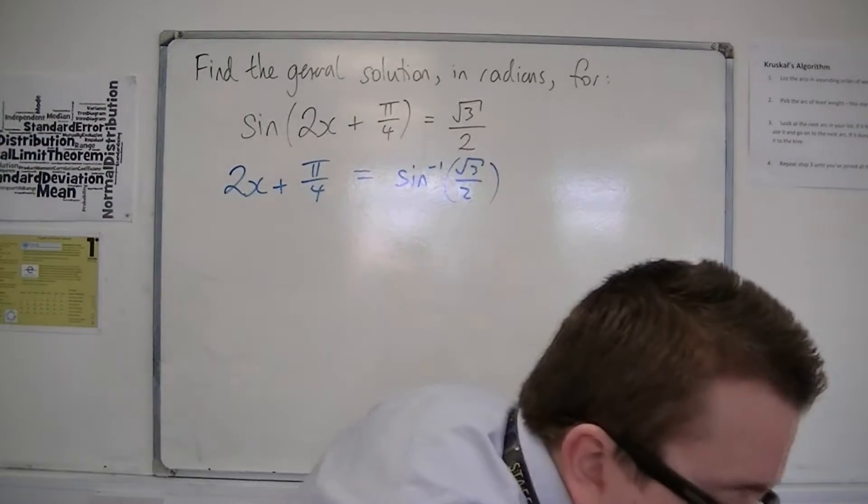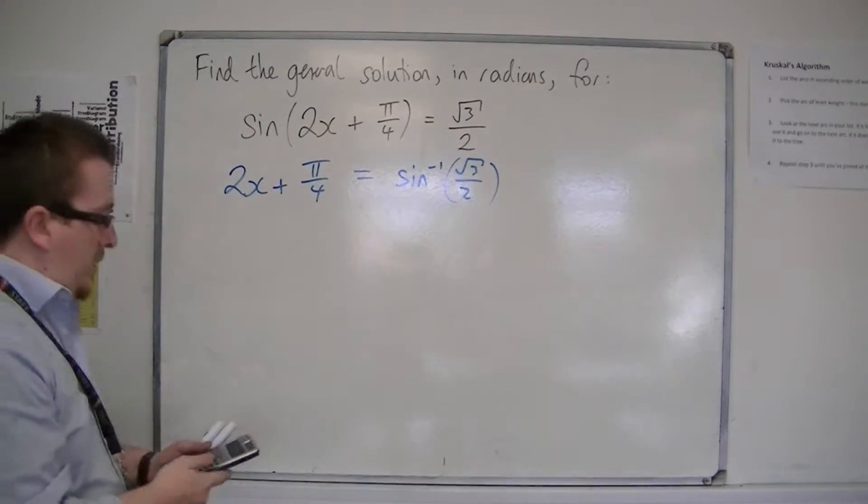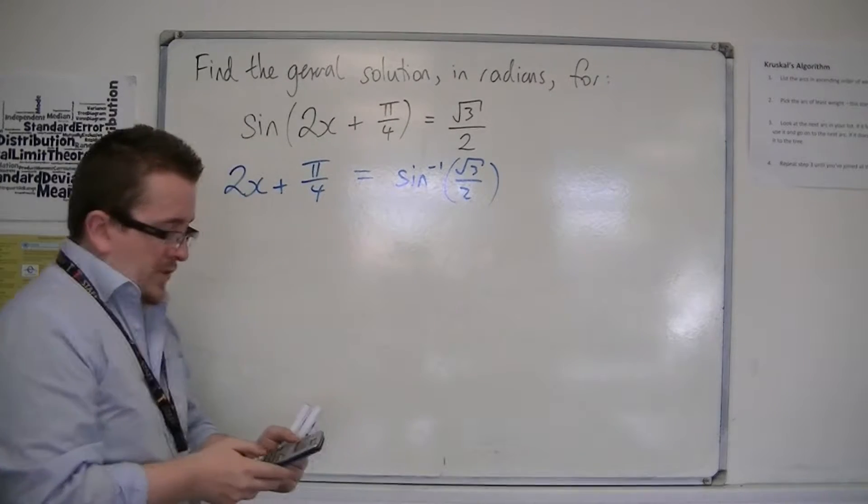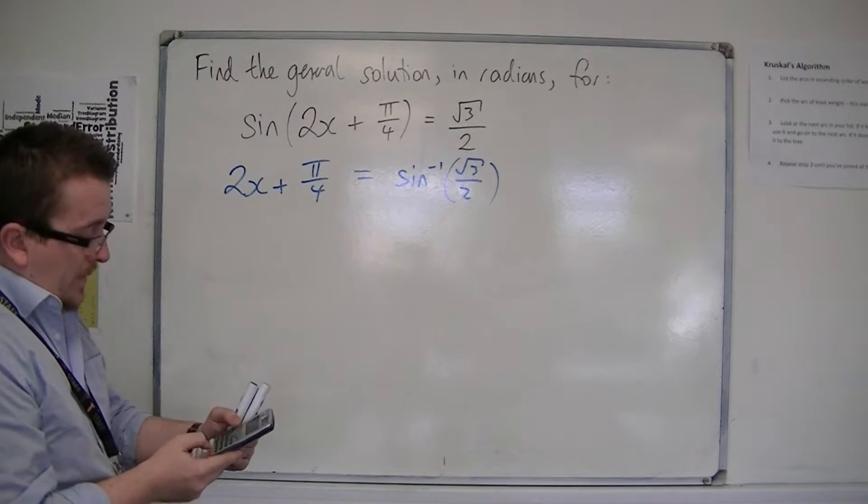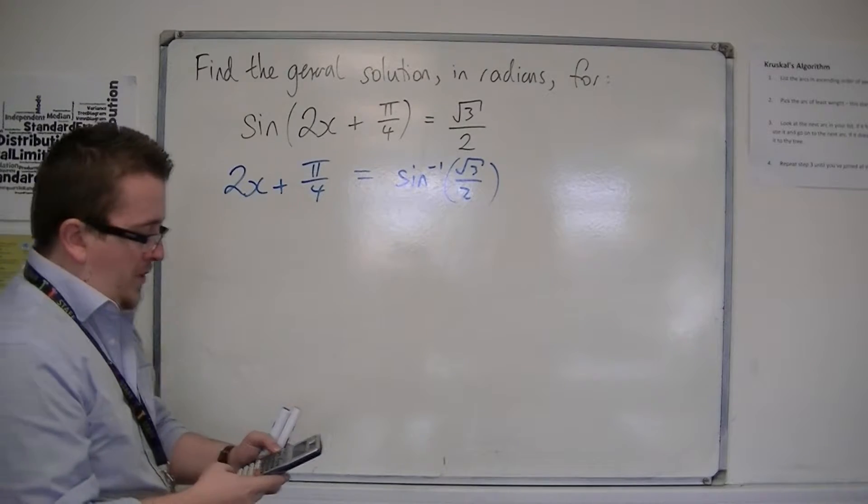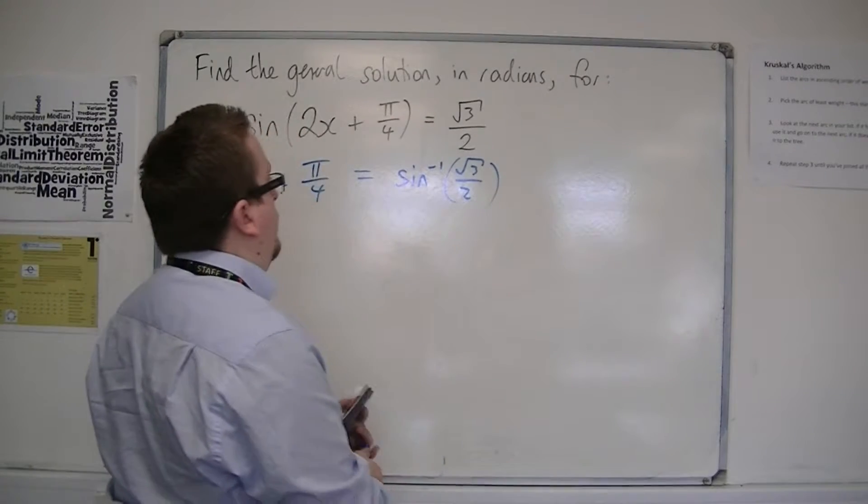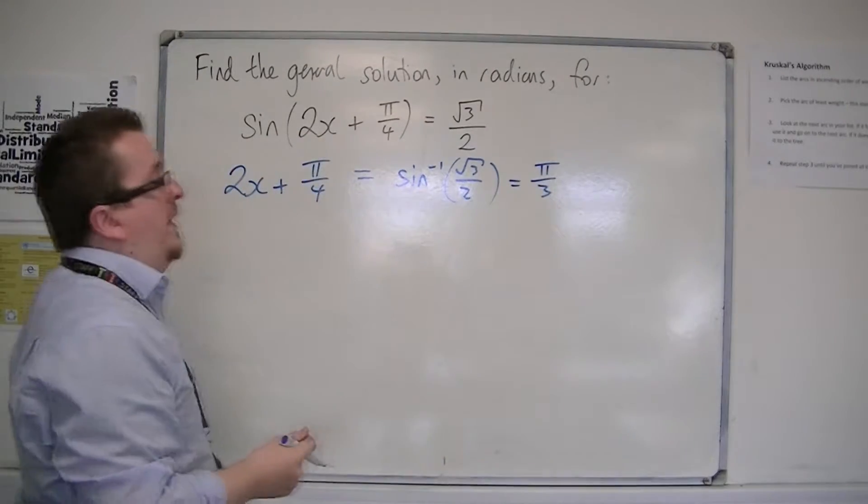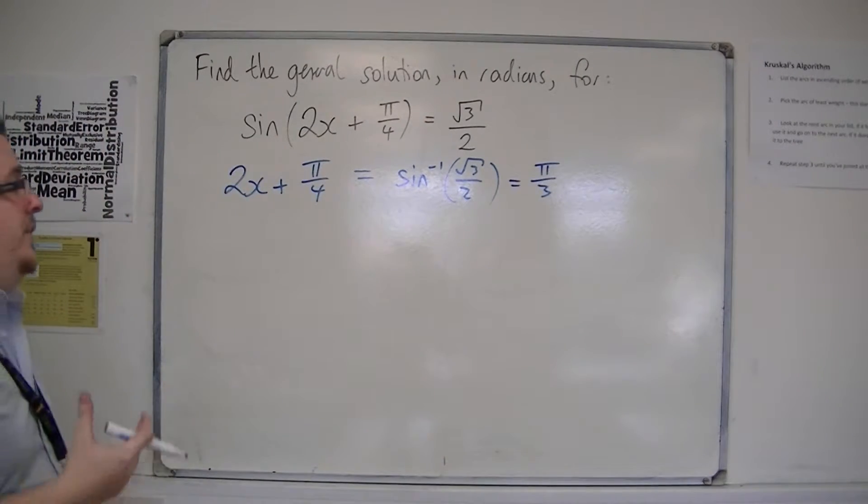You can do that using a triangle or your calculator. We're going to do this in radians, so make sure your calculator is in radians. Inverse sine of √3/2 is π/3. That's one of the solutions. That's the alpha that I'm working with.